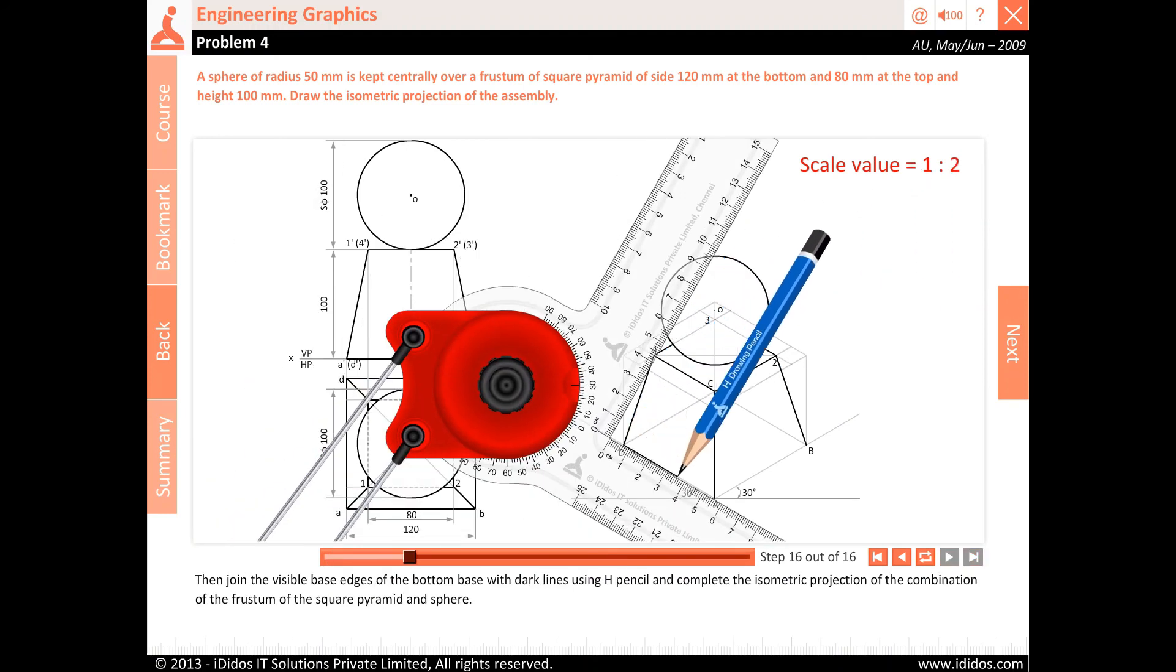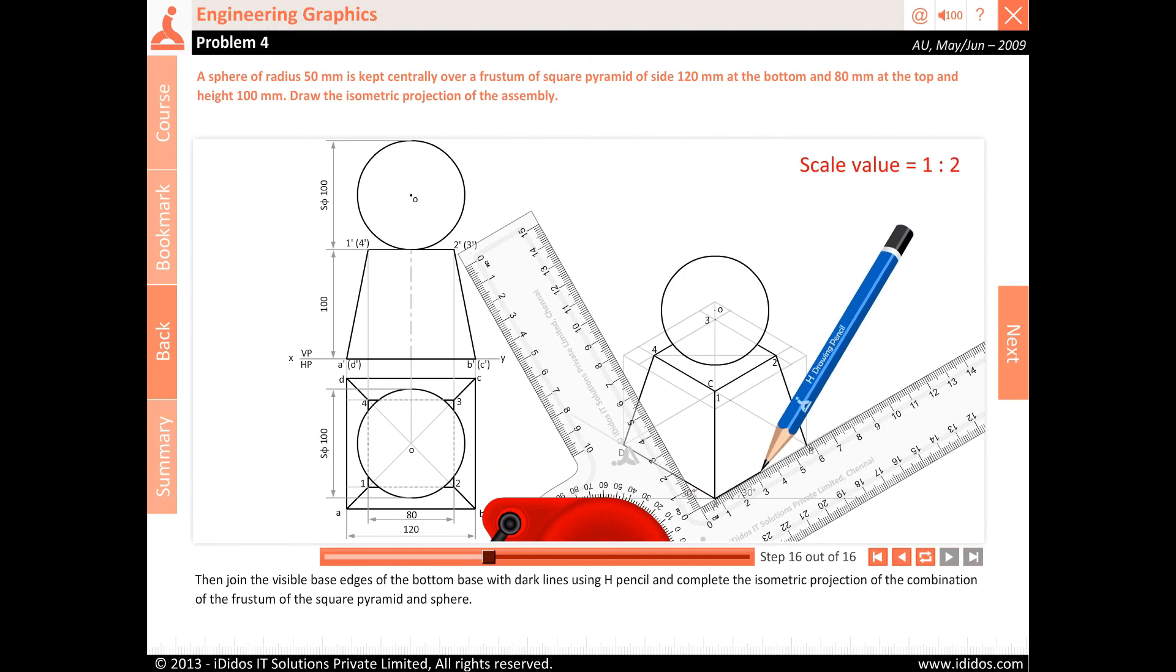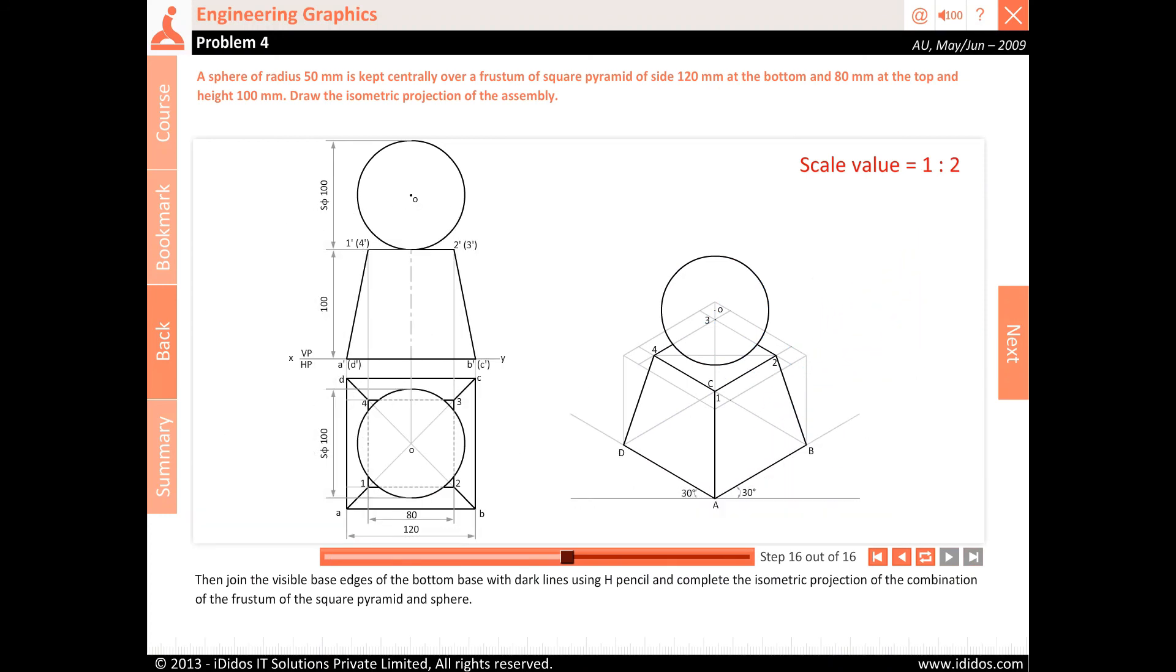Then join the visible base edges of the bottom base with dark lines using H pencil and complete the isometric projection of the combination of the frustum of the square pyramid and sphere.